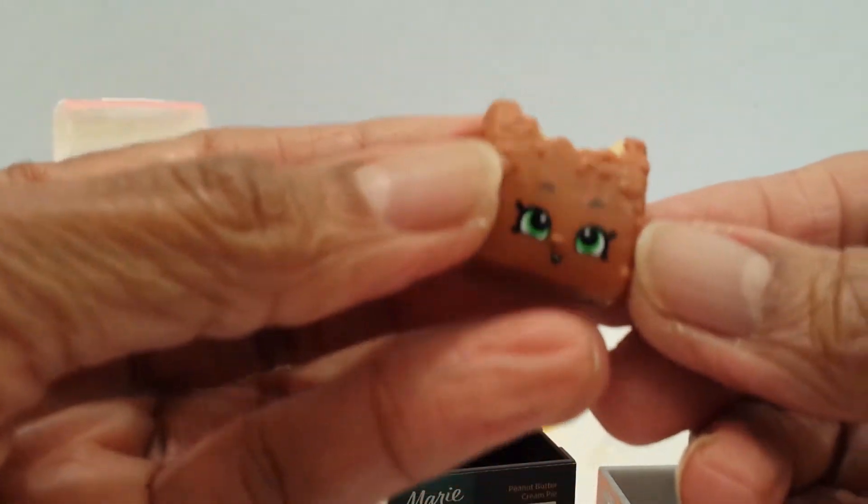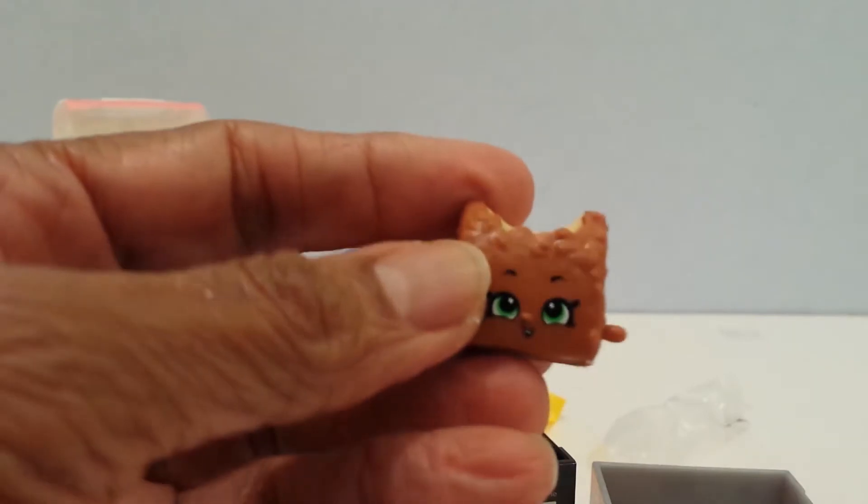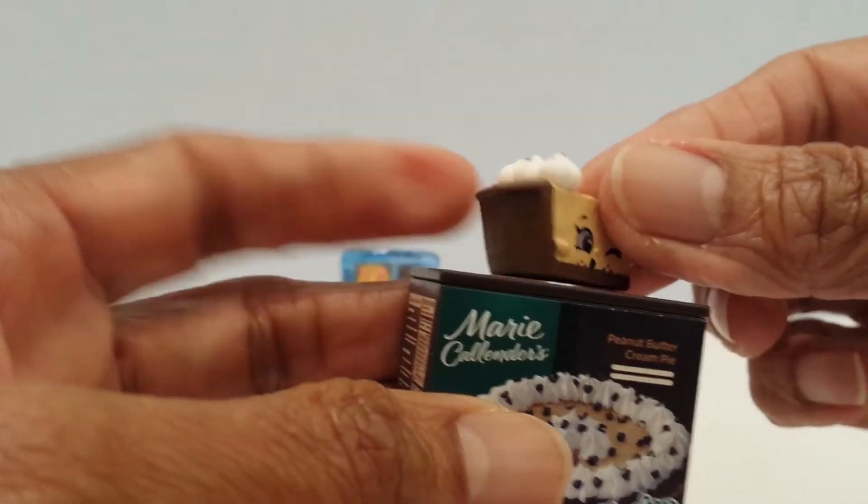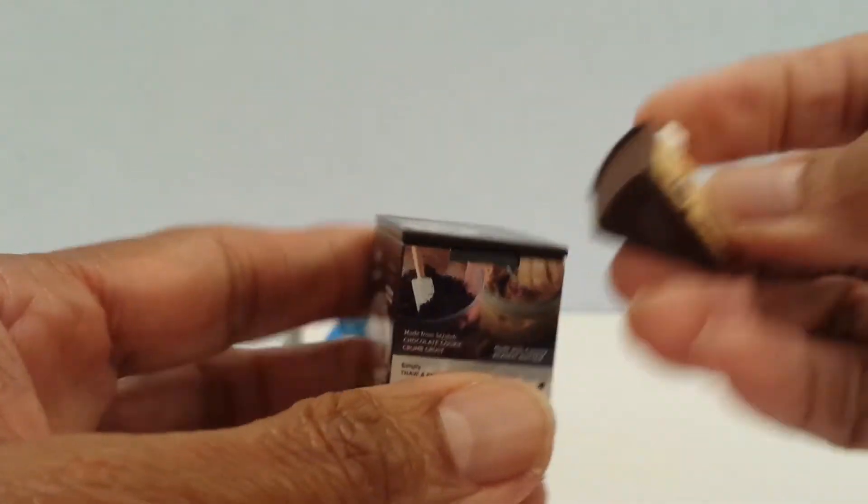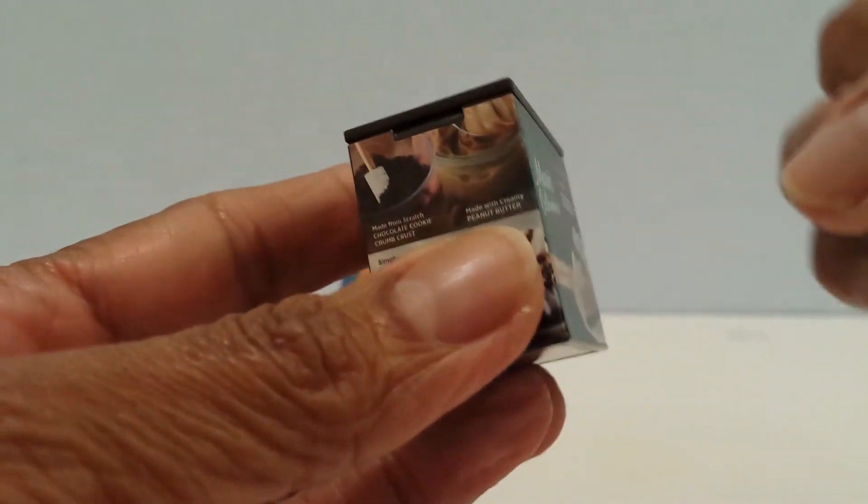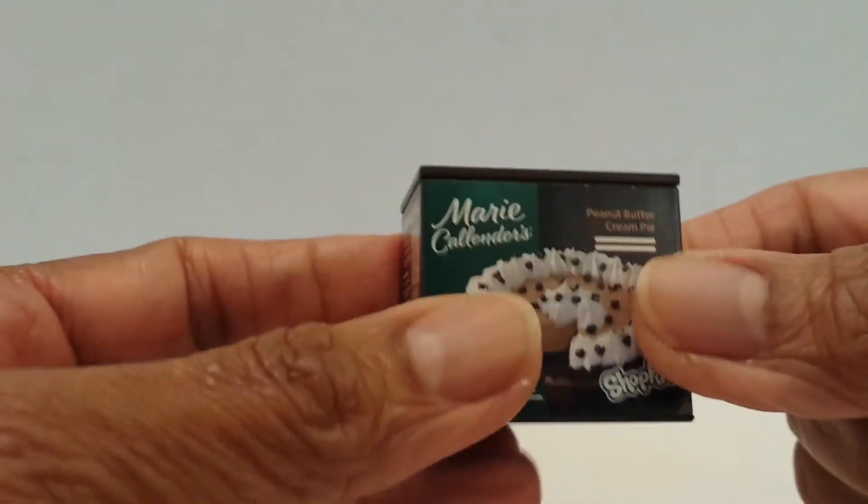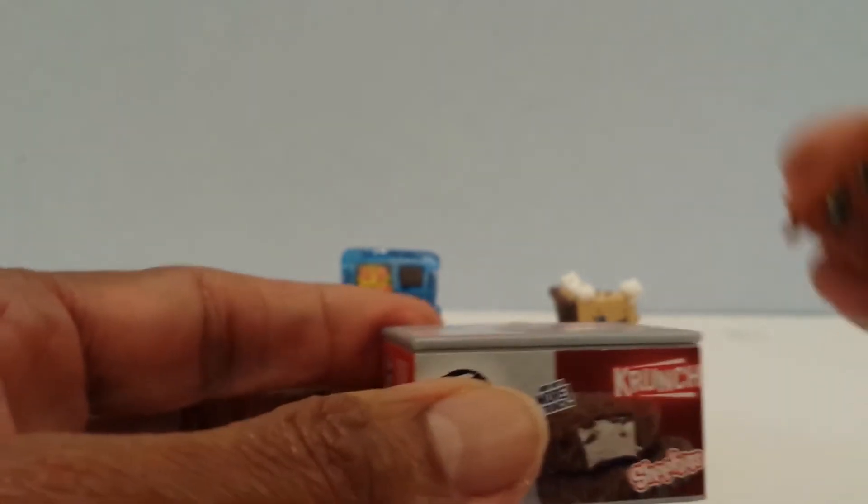But anyway, guys, I will look up the names of these guys and let you know. Okay guys, so this is Sweetie Pie right here, looking pretty pretty good. And I meant to mention, guys, that these containers are hard plastic. They are super awesome, nice little packaging. So this is the Sweetie Pie as I said, and here for the Klondike, it's Crunch Klondike. That's the name of this little guy here.